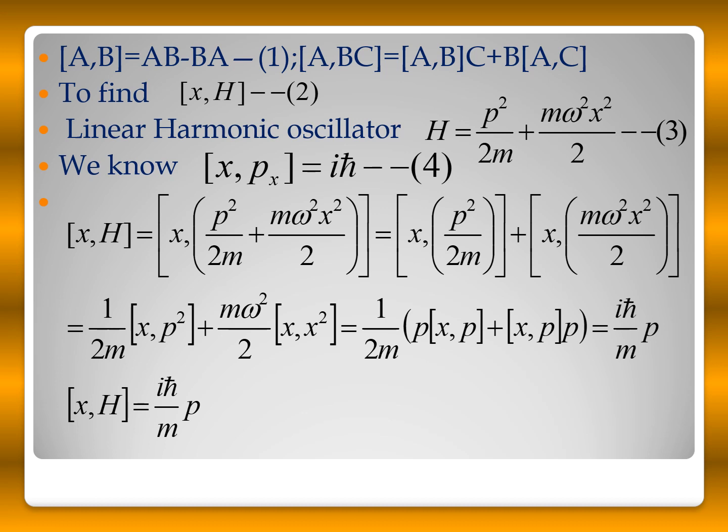The second term, the commutation relation [x, x squared], is zero. For [x, p squared], this can be written as p times [x, p] plus [x, p] times p. Substituting the value of [x, p] equal to iℏ and simplifying, this is equal to iℏ times p over m. So the commutation relation between position and the Hamiltonian is iℏ by m times p.